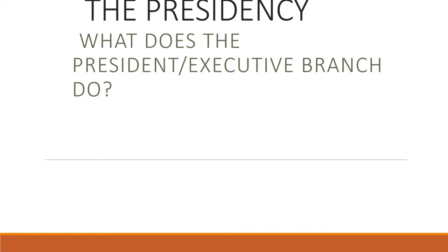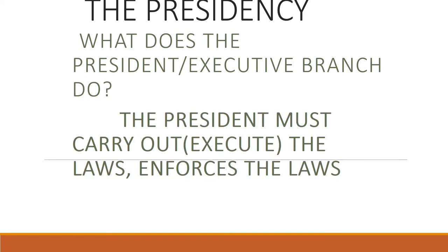So what does the president and executive branch actually do? The president executes the laws — the legislative branch writes the laws, the president executes or carries them out, and the judicial branch interprets the law and says whether the law is constitutional or not.